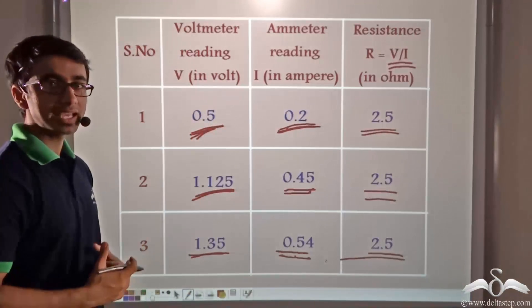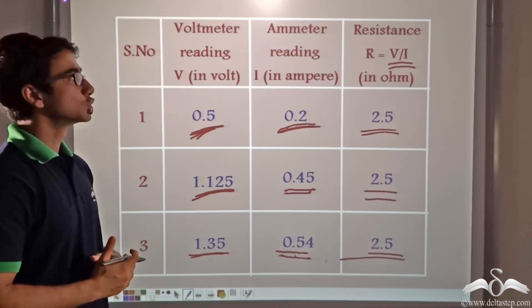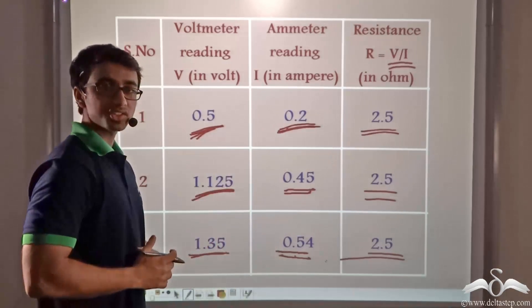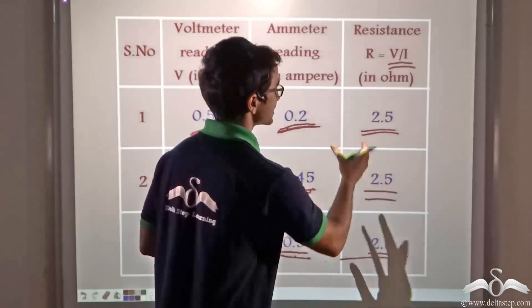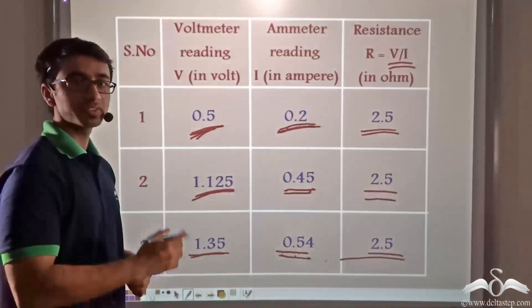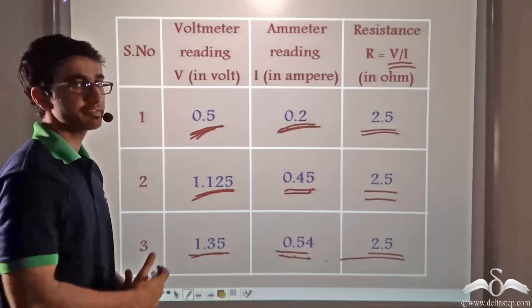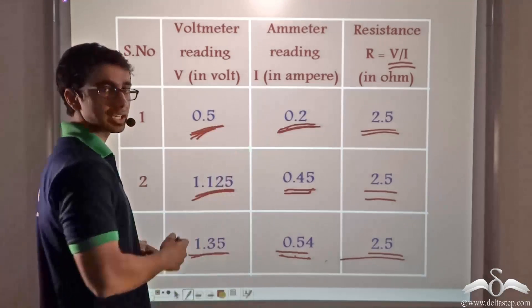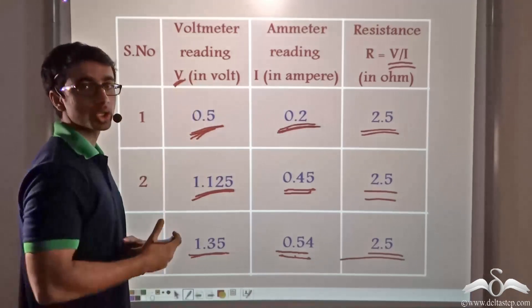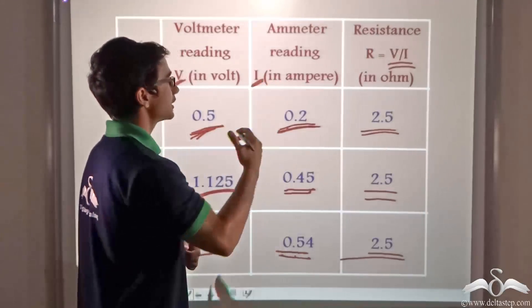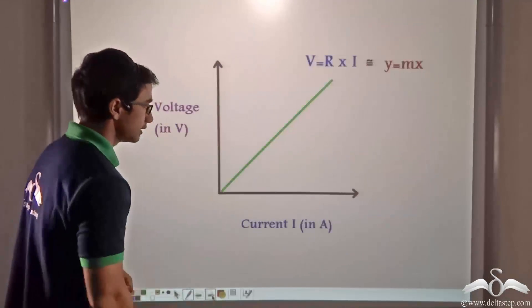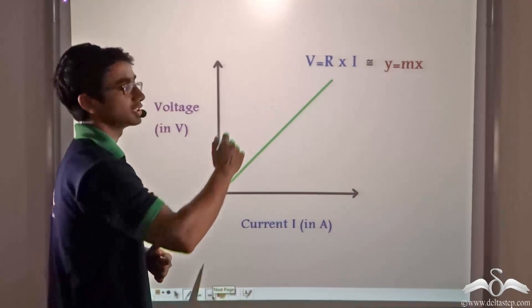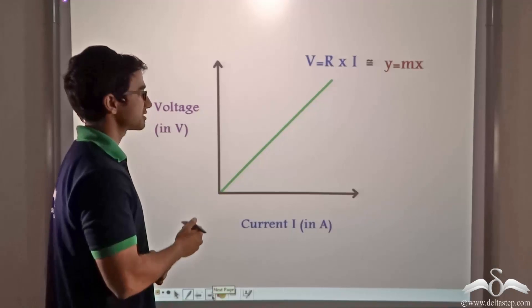The ratio V by I equals 2.5 in all cases. V divided by I is nothing but the resistance of the conductor. So if we divide the voltage across the conductor by the current flowing through it, we get a constant value — the resistance of the given conductor. This verifies Ohm's law. Now if we plot these values on a graph with voltage on the y-axis and current on the x-axis, since V by I is constant, we get a straight line passing through the origin.